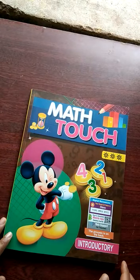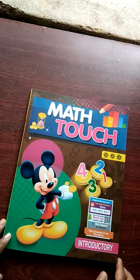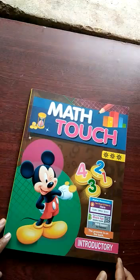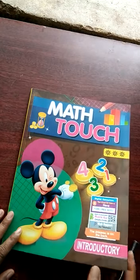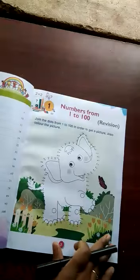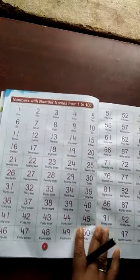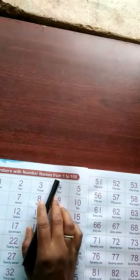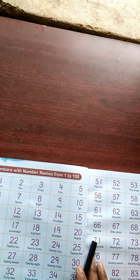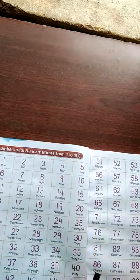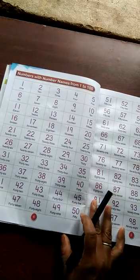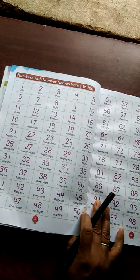Good morning children, once again come back to mathematics class. In the last class I taught you page 3 and 4. Today once again we will see page 4. In page 4, here it is written numbers with number names from 1 to 100. In the homework I had given you numbers 1 to 50 right in your mathematics copy. Today we will say orally numbers 1 to 50. So let us start.